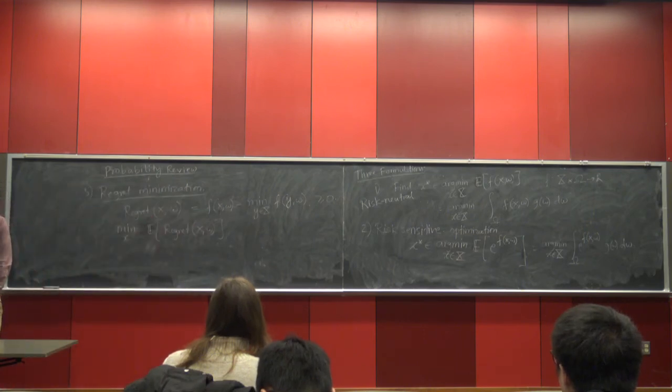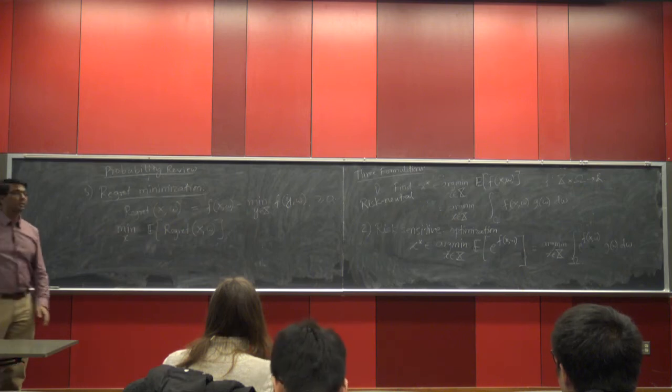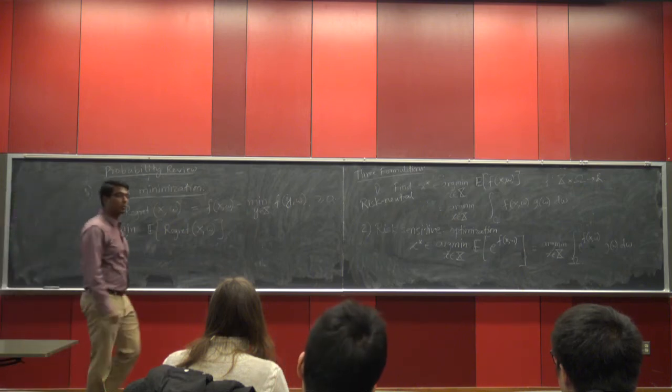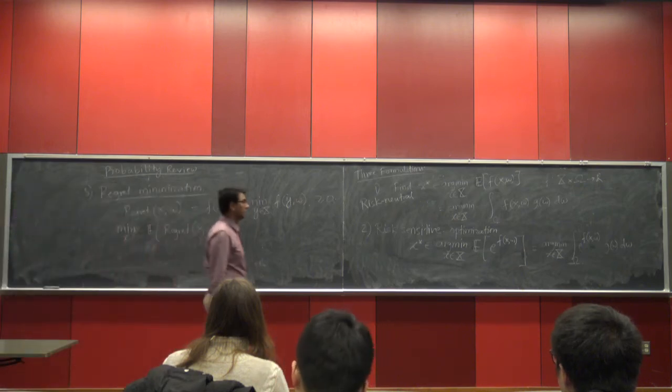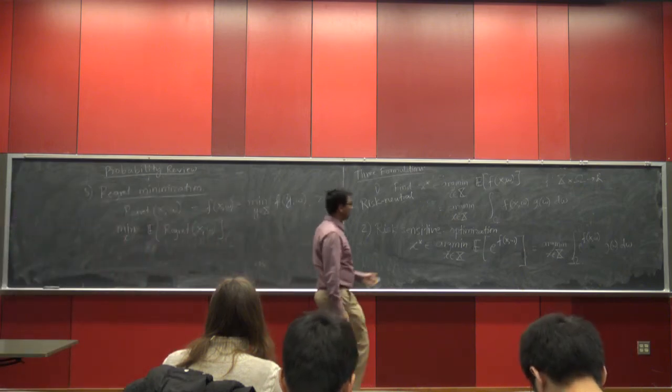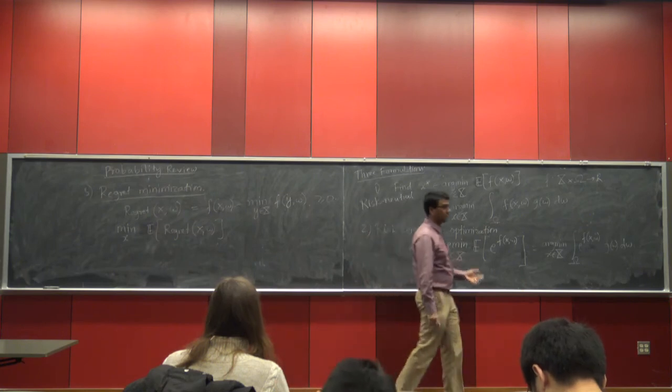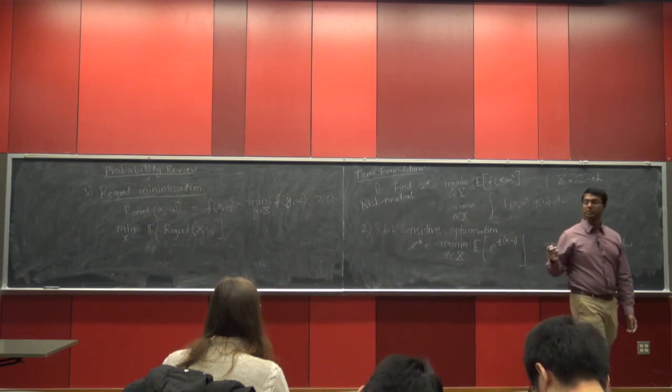So those are the three major optimization formulations you might encounter when dealing with stochastic optimization: risk-neutral expected value minimization, risk-sensitive optimization, and regret minimization.